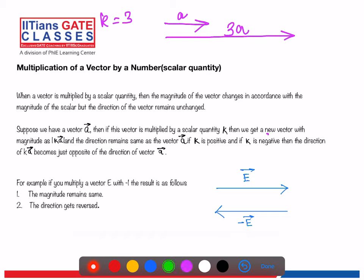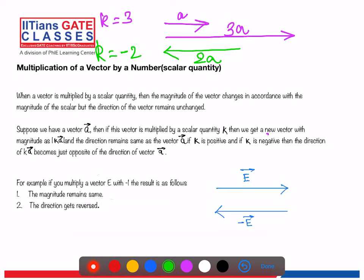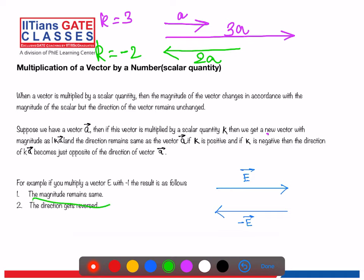For example, if you multiply a vector A by k = 3, you get a new vector 3A in the same direction but three times the magnitude. If k = -2, the new vector is 2A in the opposite direction. If you multiply vector E by -1, the magnitude remains the same but the direction reverses — this vector represents minus E.